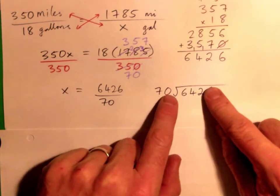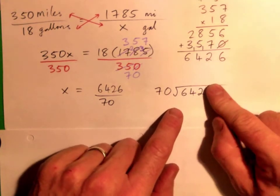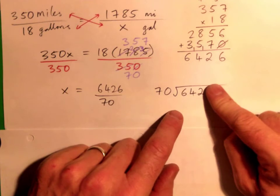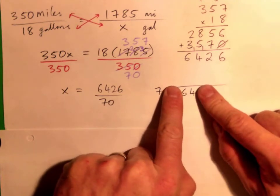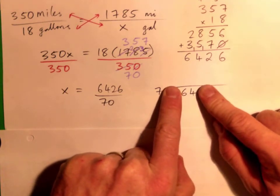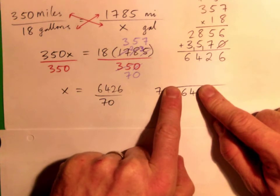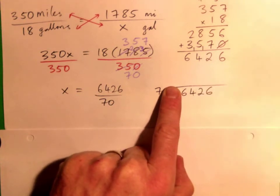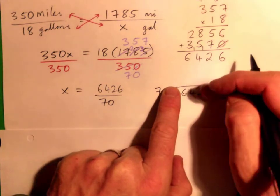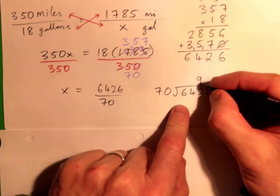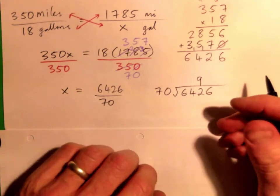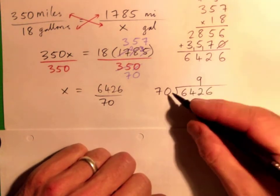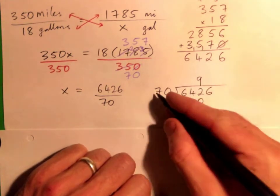Well, 10 times 7 is 70, right? So it's almost like 7 into 64. So it's 9 times, because 9 times 7 is 63. So 9, and 9 times 70...